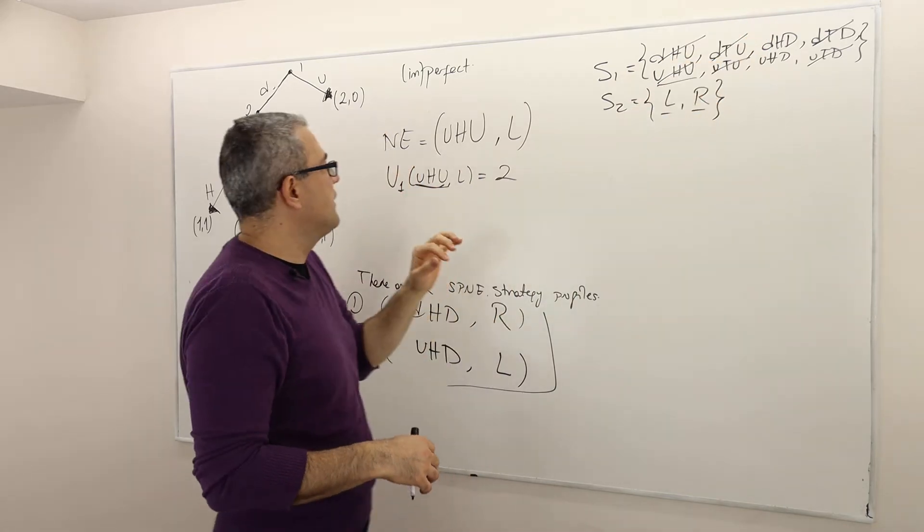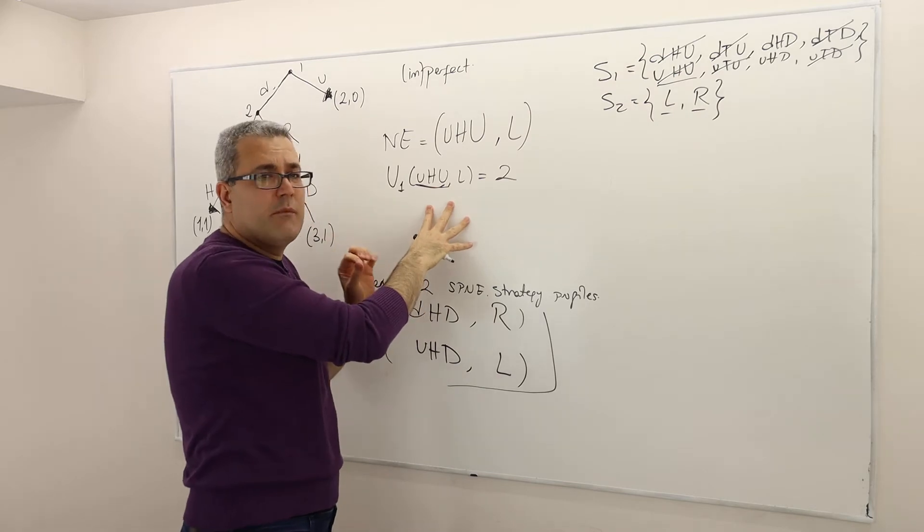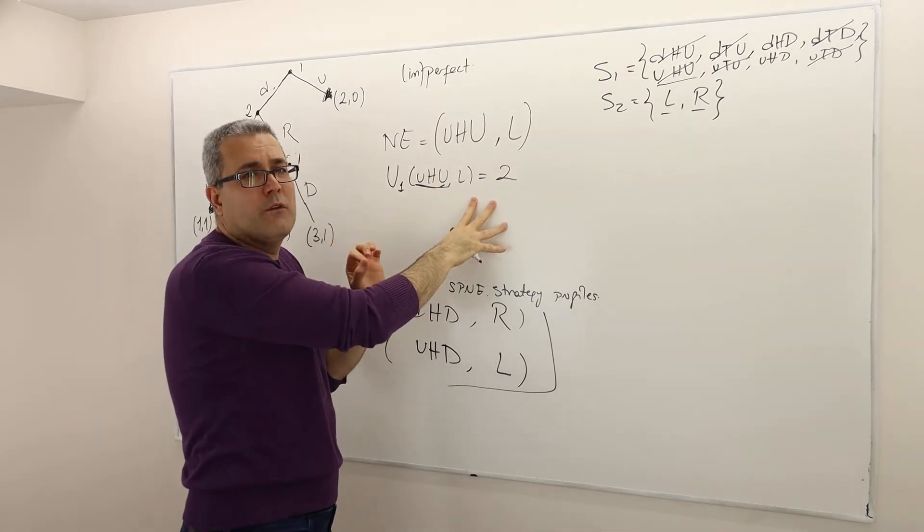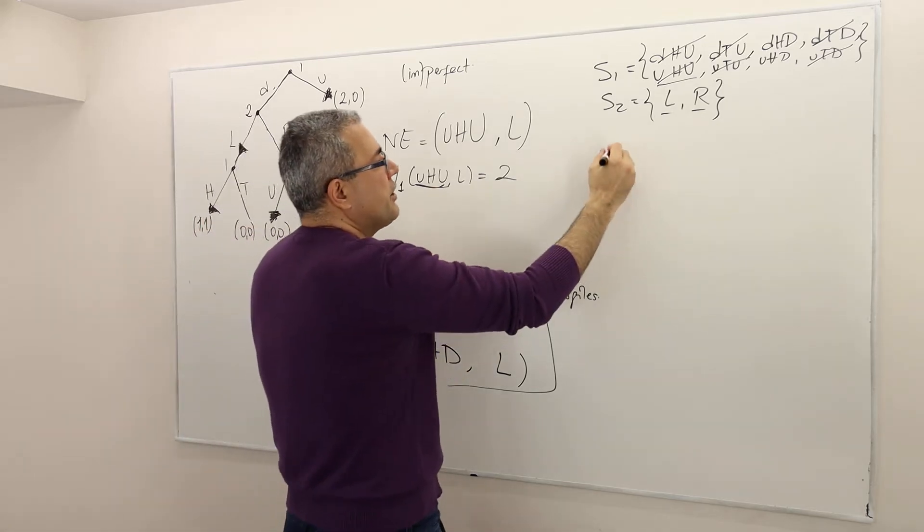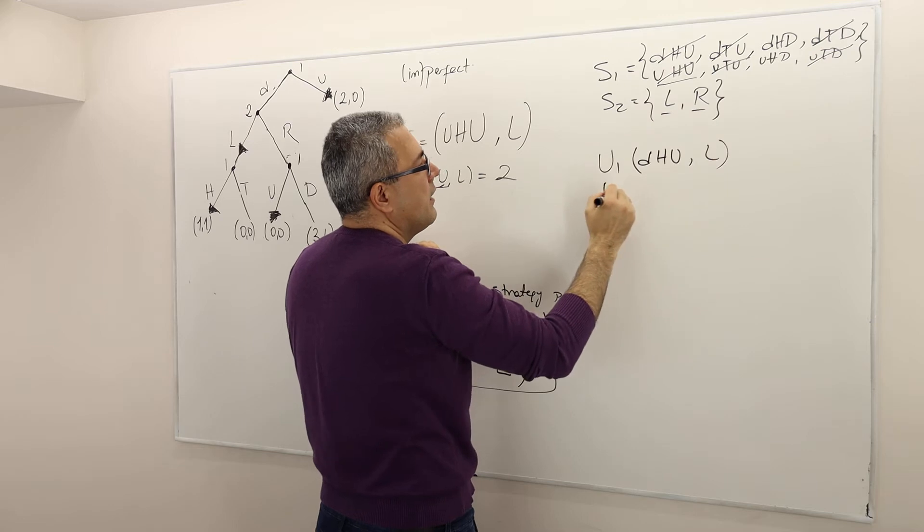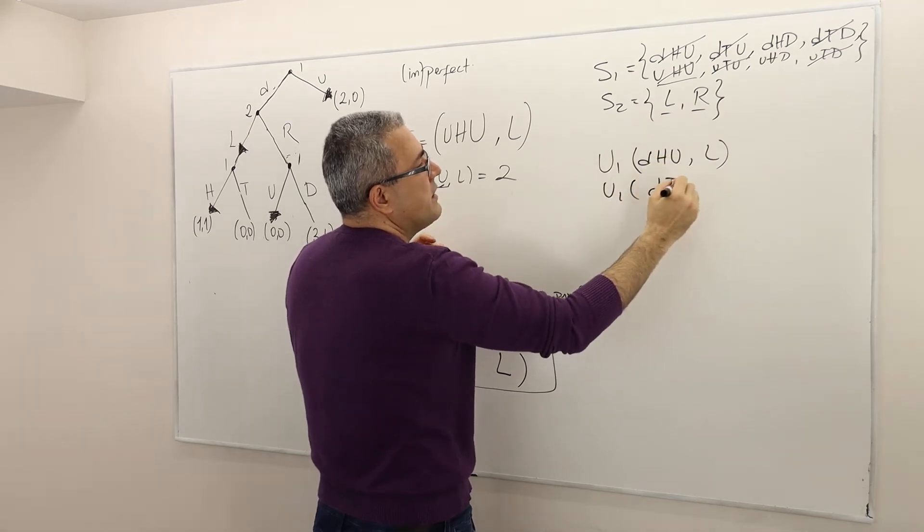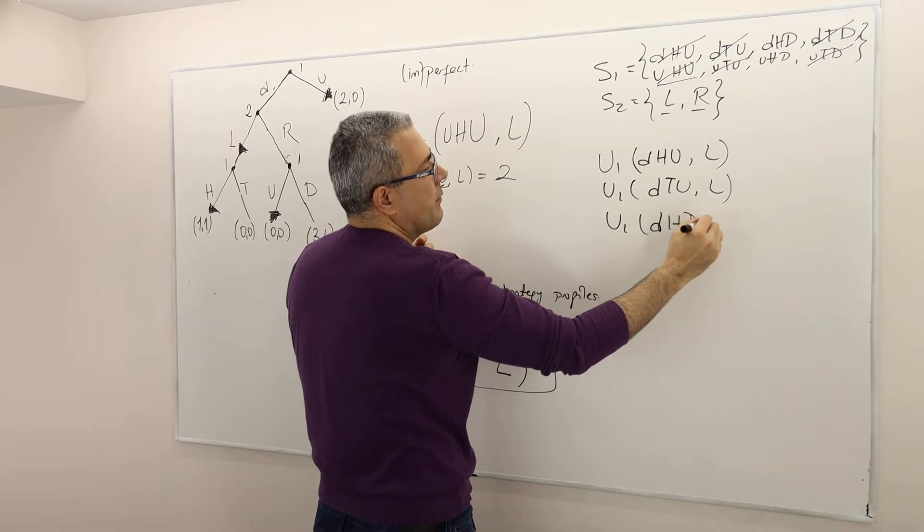Alright, and the question is, is any one of those other strategies will bring him more than two payoff? Well, if you like, you can go one by one. How so? Check the payoff if he, for example, plays DHU, L. Check DTU, L. Check DHD, L.